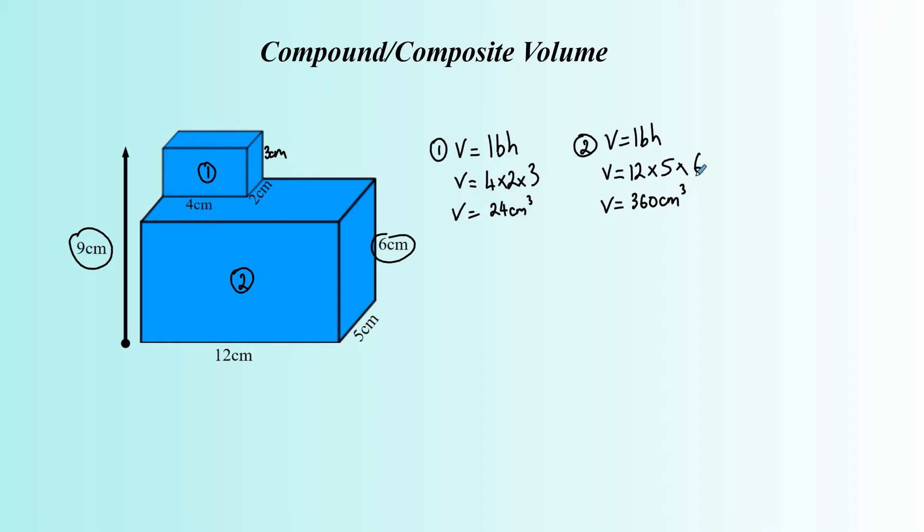Now we're not quite finished there. We found the volume of each shape individually but we're looking for the total volume here when we're dealing with composite or compound shapes. To find the total in this case what we're going to do is just add them together. So 24 add 360 to give us 384 cubic centimeters.